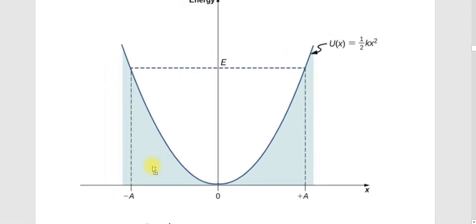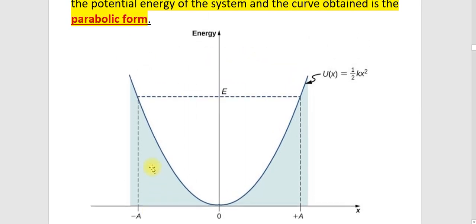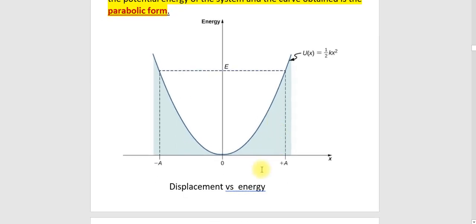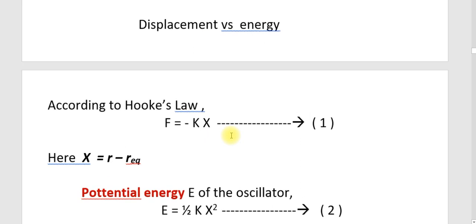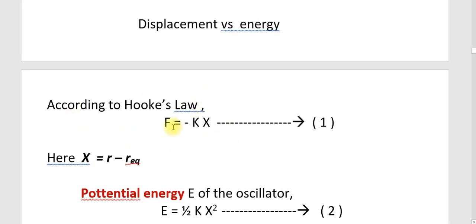Here is the parabolic curve — this is a displacement versus energy graph. The x-axis is displacement and the y-axis is energy. According to Hooke's law, F = -kx (equation 1). In simple harmonic motion we apply this equation. The displacement x is the distance from the equilibrium position.